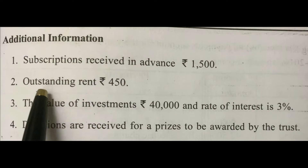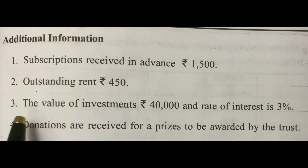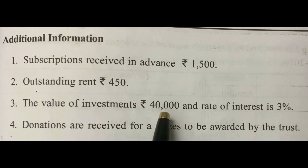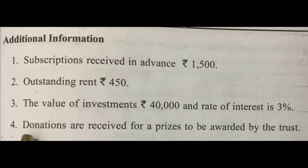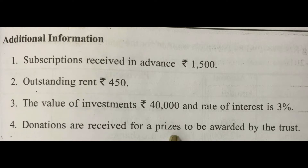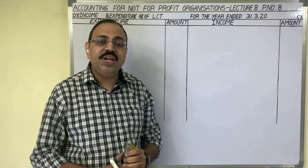Additional information: first, subscriptions received in advance 1,500 rupees; second, outstanding rent 450 rupees; third, the value of investments is 40,000 and the rate of interest is 3%; fourth, donations are received for prizes to be awarded by the trust.